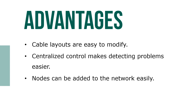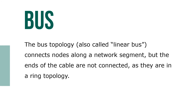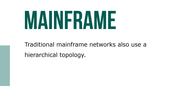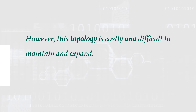Advantages of the star topology include that cable layouts are easy to modify, centralized control makes detecting problems easier, and nodes can be added to the network easily. In a ring topology, no host computer is required because each computer manages its own connectivity. A bus topology, also called a linear bus, connects nodes along a network segment but the ends of the cable are not connected as in a ring topology. A hierarchical topology, also called a tree, combines computers with different processing strengths at different organizational levels; traditional mainframe networks also use this topology. In a mesh topology, also called a plex or interconnected, every node is connected to every other node — this topology is costly and difficult to maintain and expand.